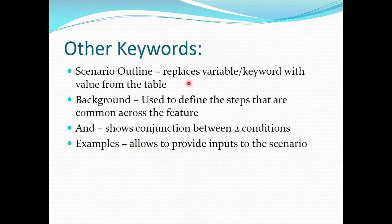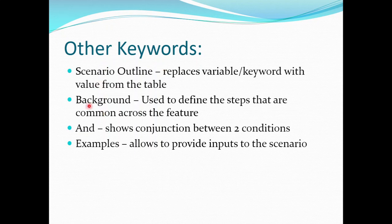Apart from the Given, When, and Then keywords, Cucumber also provides us a few other keywords. Let's see each of them in detail. First is the Scenario Outline. The Scenario Outline is basically used when you want to pass test data in your feature file using the Examples keyword. So whenever you are using the Examples keyword, you have to define your scenario using Scenario Outline instead of Scenario.